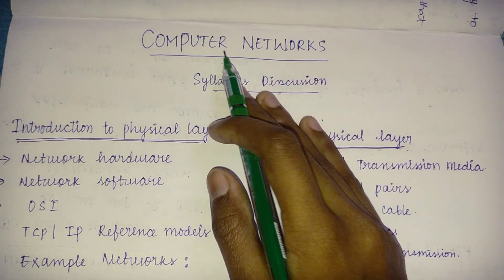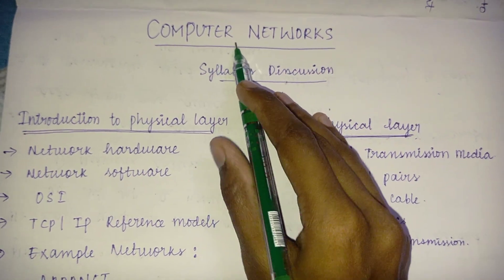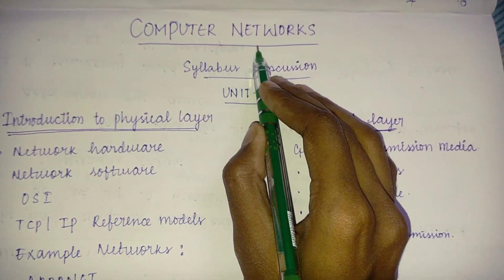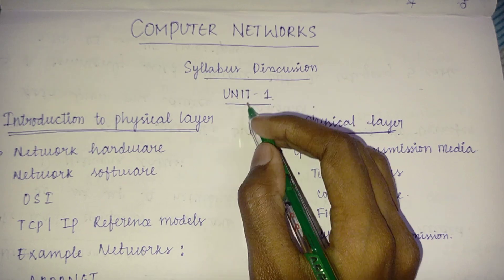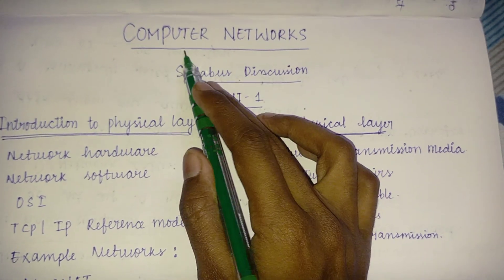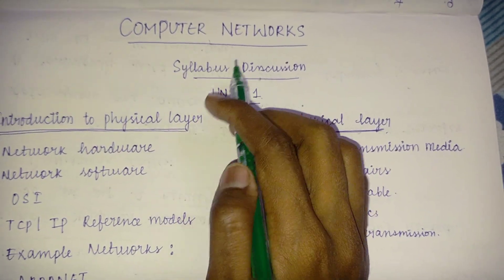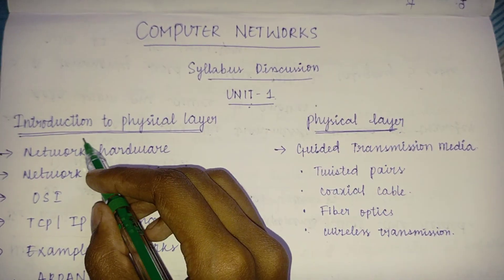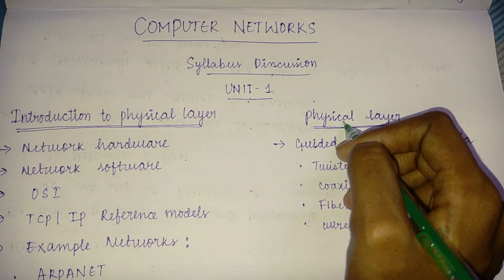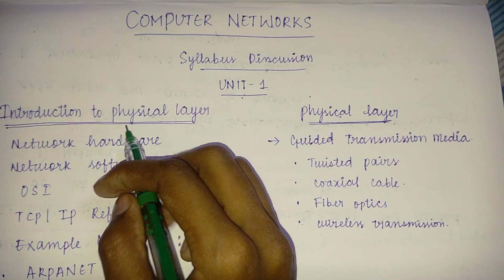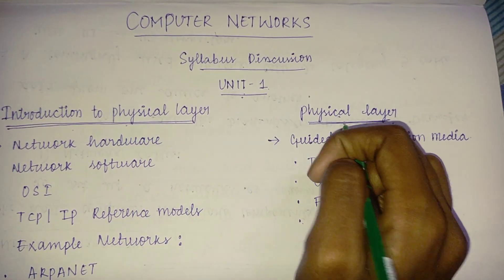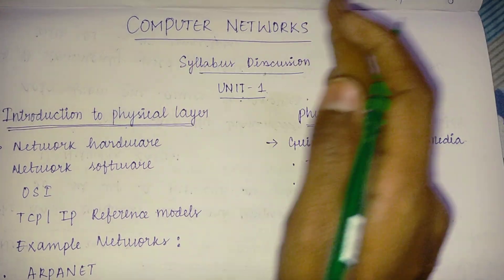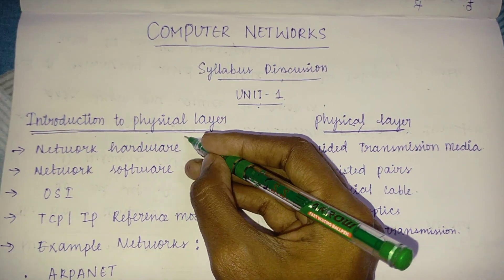Today we'll be discussing the computer network syllabus for Unit One. This unit is divided into two different parts: introduction to the physical layer, and the physical layer itself.